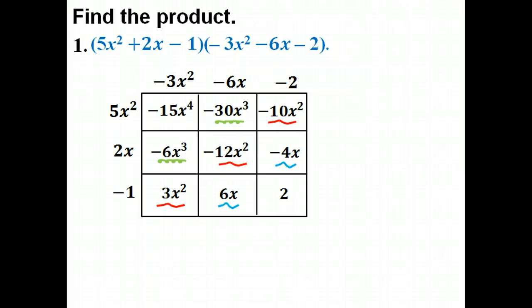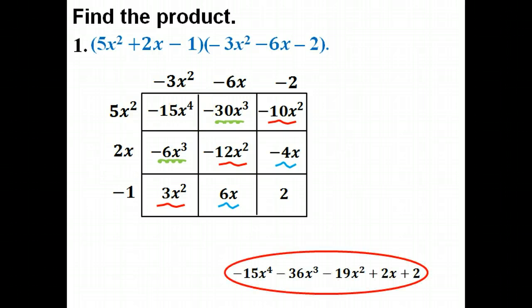Now it's just a matter of combining all of these together. You want to combine your x cubes together, you want to combine your x squares together and your x's, and then write it in standard form, that would be descending order according to their power. So your answer would be negative 15x to the fourth minus 36x cubed minus 19x squared plus 2x plus 2.